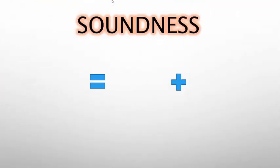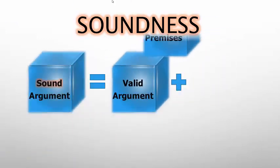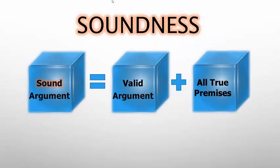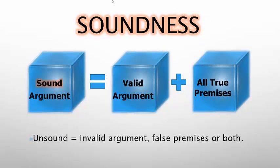Soundness applies to a deductive argument when two conditions are met. To have a sound argument, you have to have a valid argument with all true premises. In those cases, you have a great argument. An unsound argument is either invalid, has a false premise, or may fail on both counts. Soundness requires that both key elements of a deductive argument be satisfactorily met: strong inference and true premises.